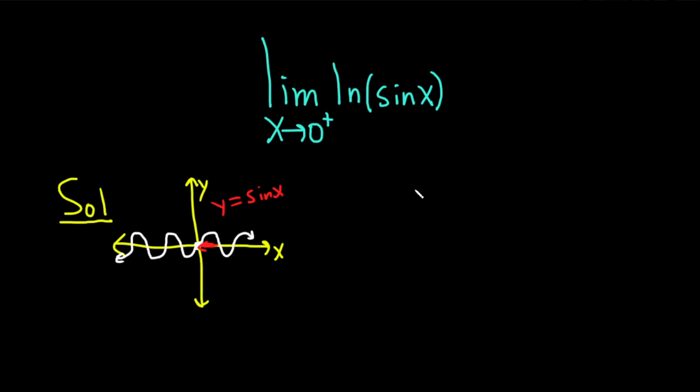Now let's think about the graph of ln. Here's the y-axis, x-axis. Let's look at the graph of ln x. The graph of ln x has a vertical asymptote at x equals 0, and it passes through the ordered pair (1,0) like this.